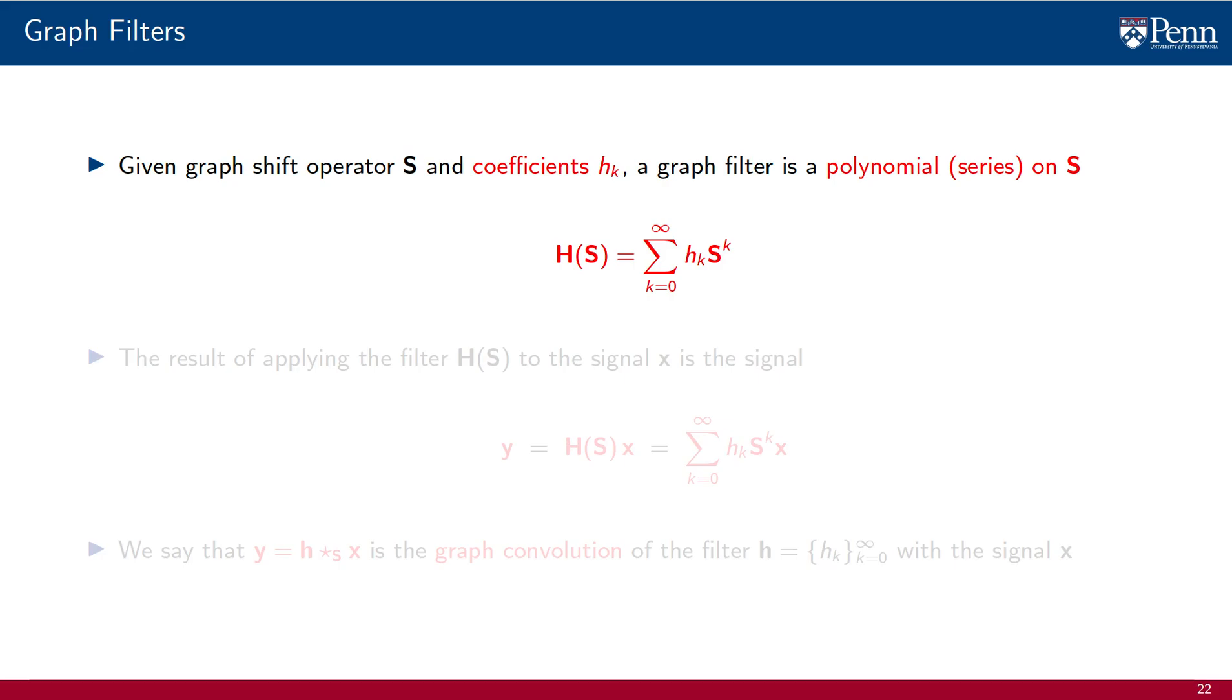The resulting graph filter is a matrix that we denote by H. Applying the filter to a graph signal x entails multiplication of the signal with a graph filter H to produce the output signal y.